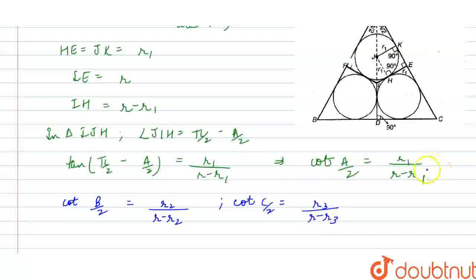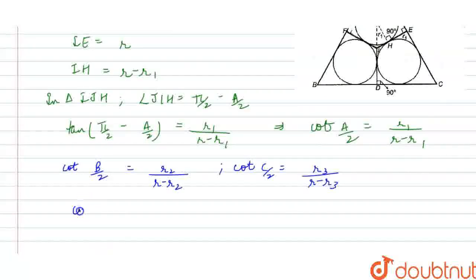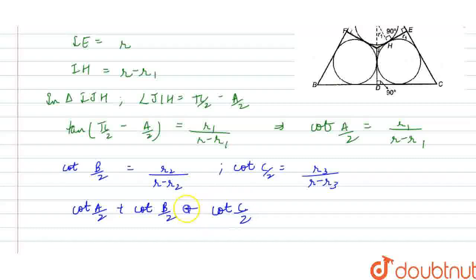Basically, if I will be adding all the above results, what I get? I am adding cot(A/2), cot(B/2), and cot(C/2). Adding, I get cot(A/2) + cot(B/2) + cot(C/2) equals R1/(R-R1) + R2/(R-R2) + R3/(R-R3).